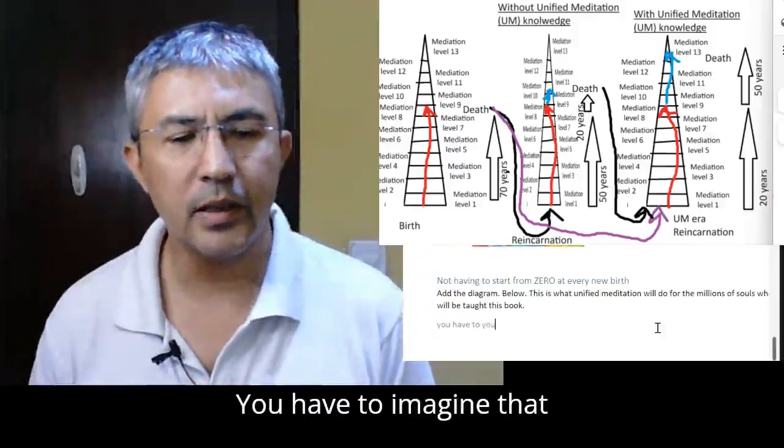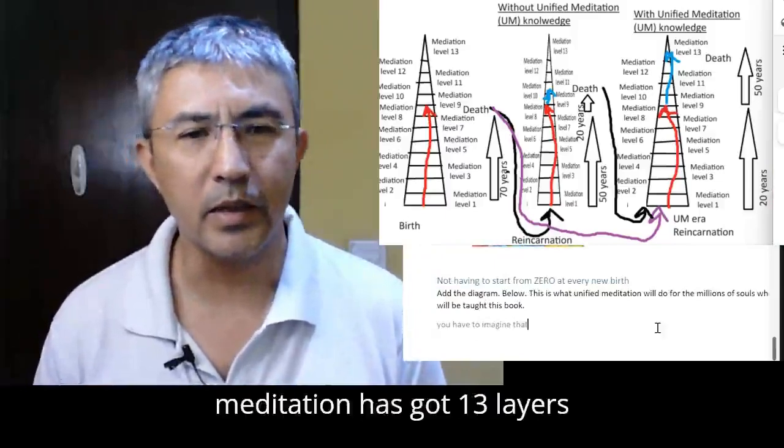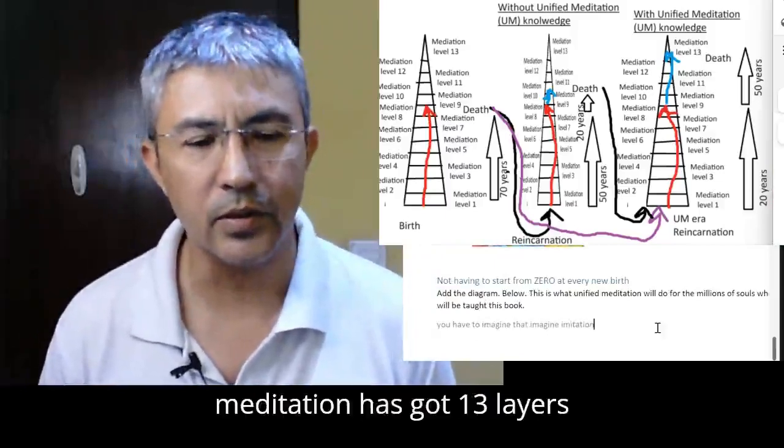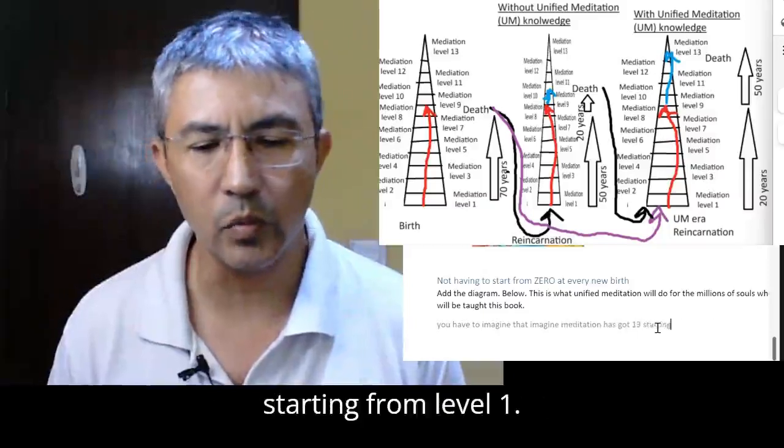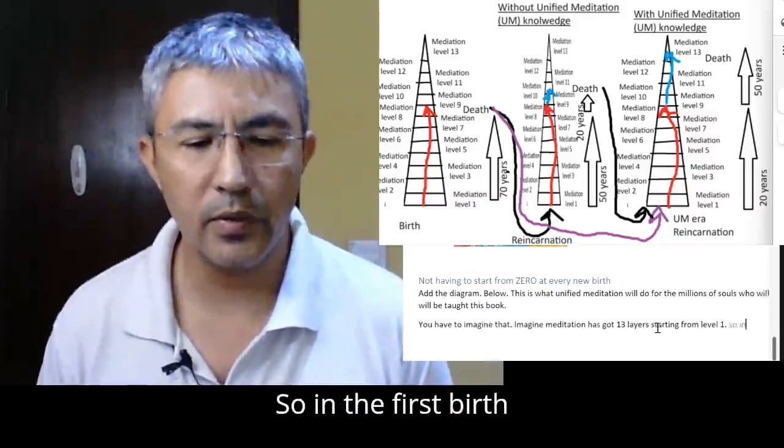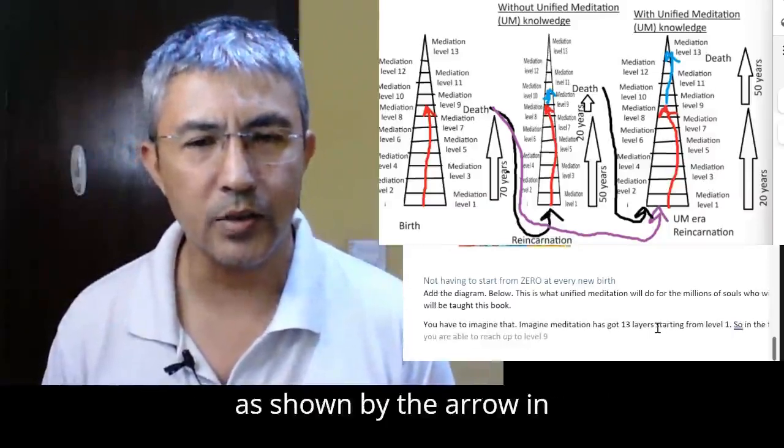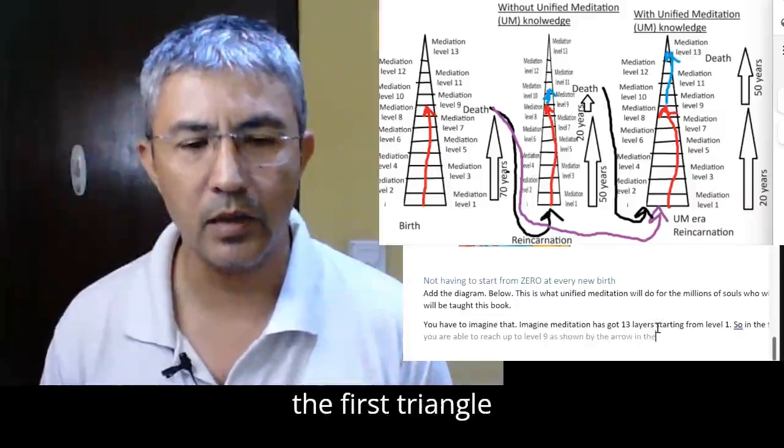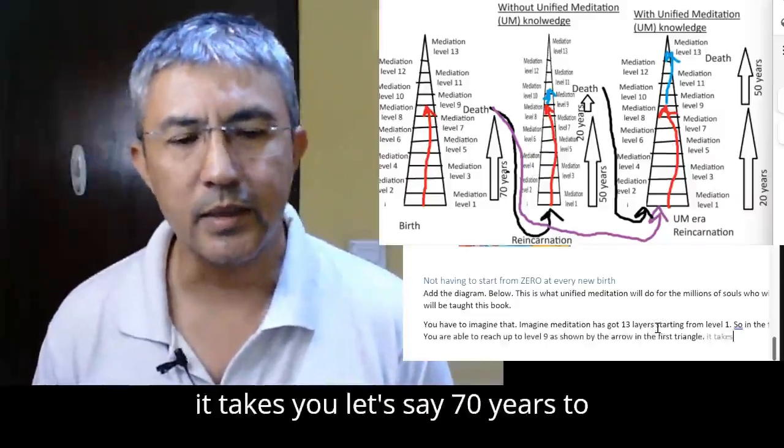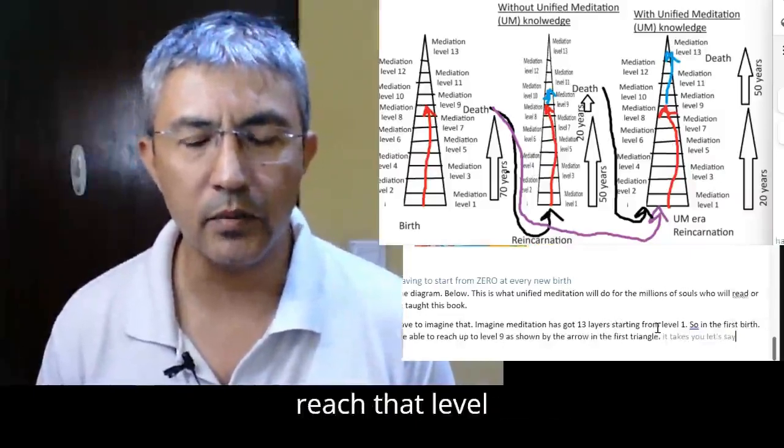You have to imagine that meditation has got 13 layers starting from level one. So in the first birth, you are able to reach up to level nine as shown by the arrow in the first triangle. It takes you, let's say, 70 years to reach that level.